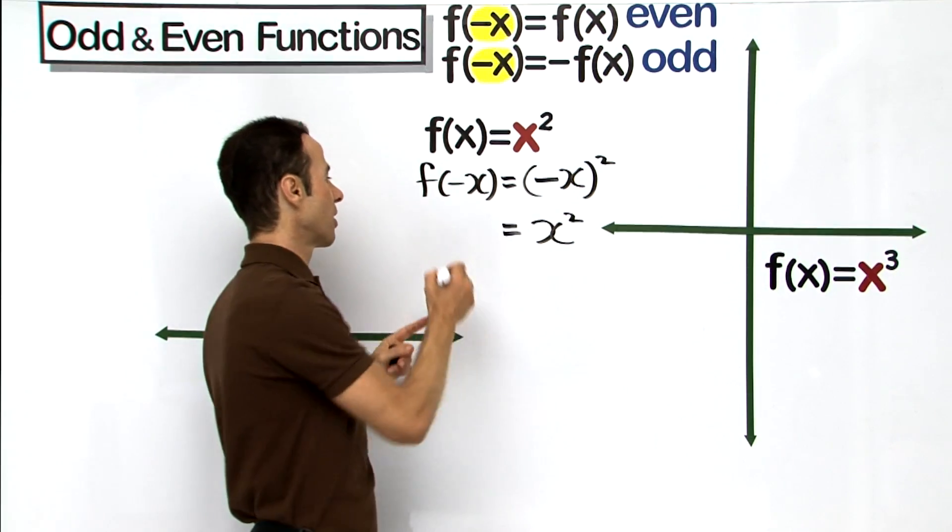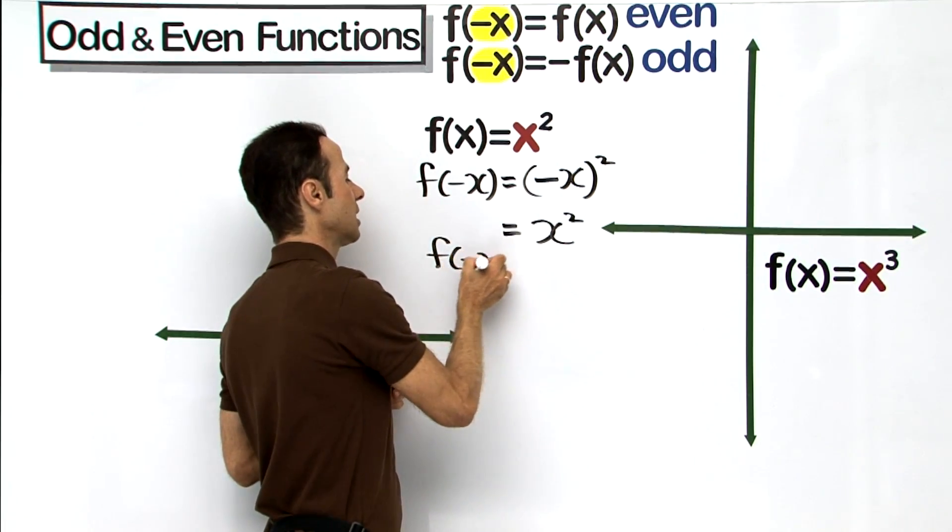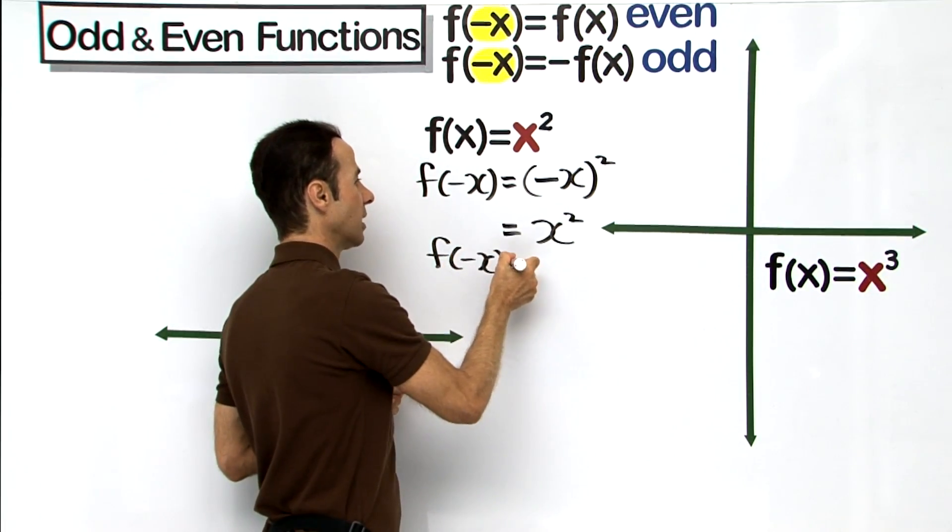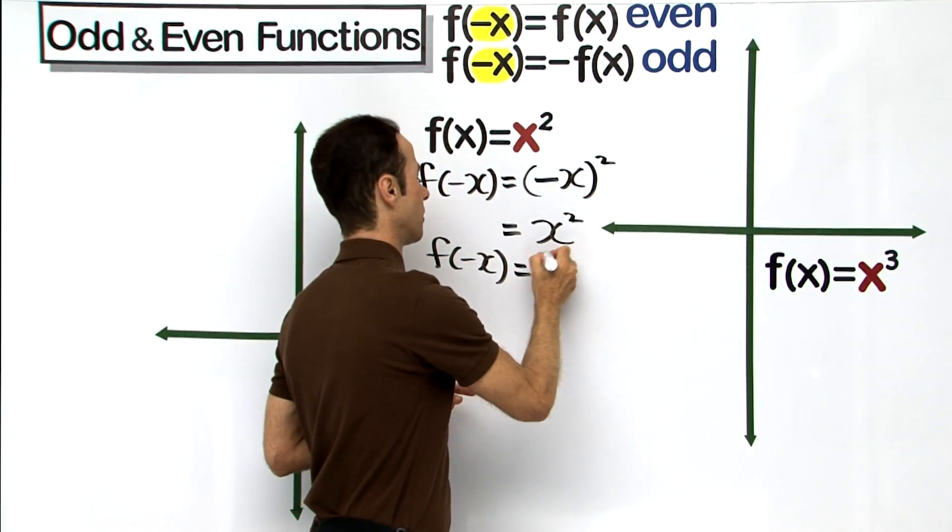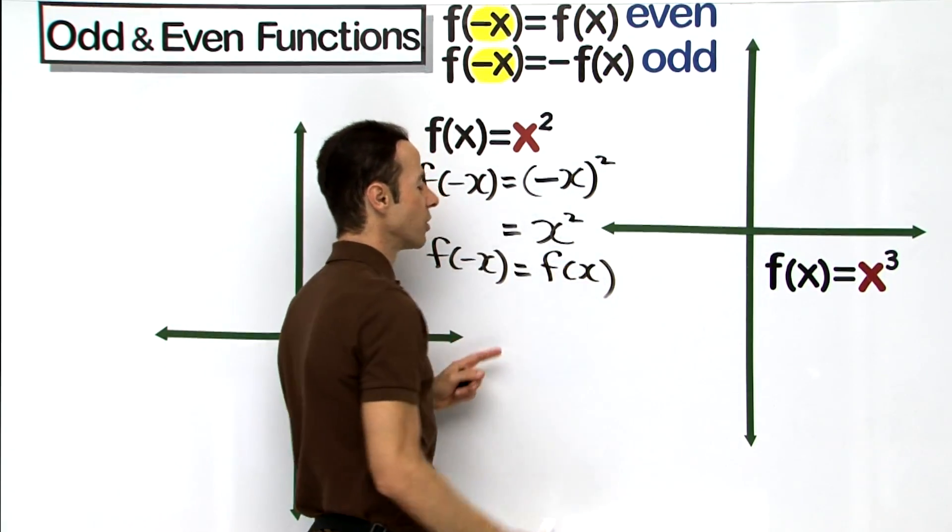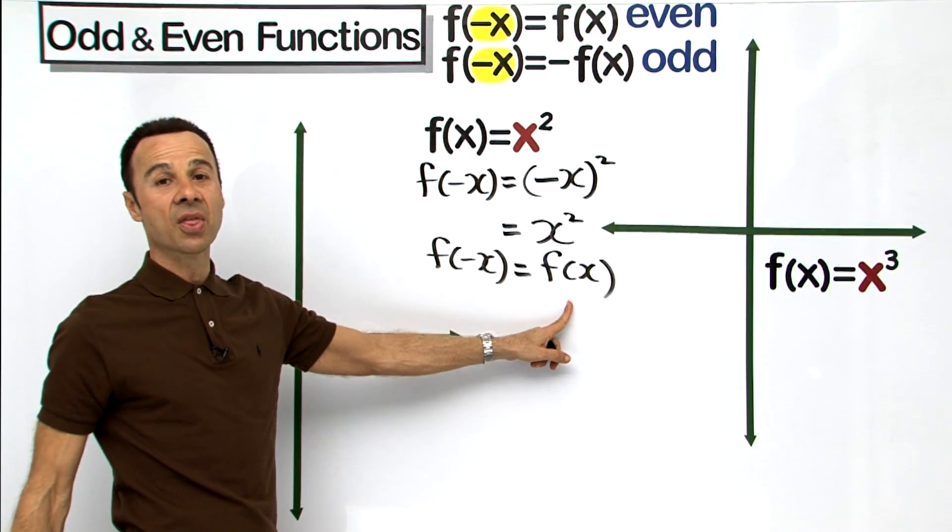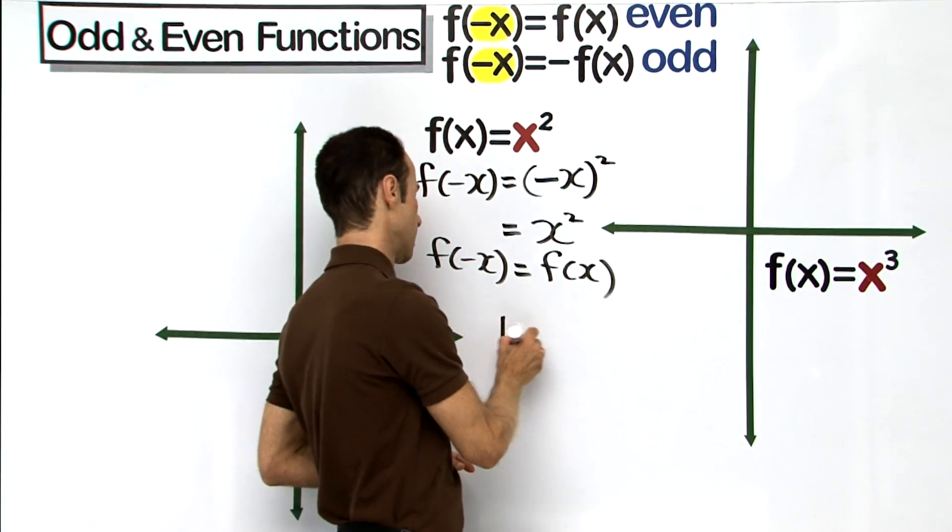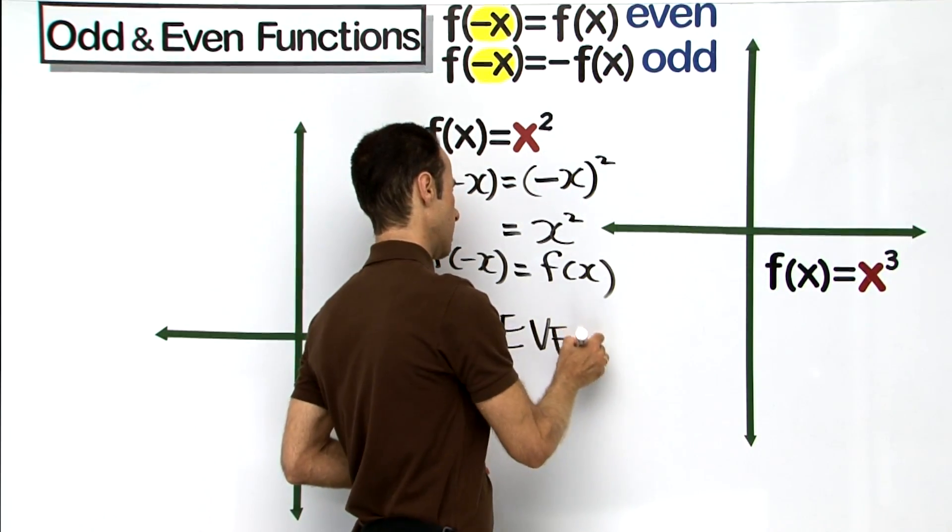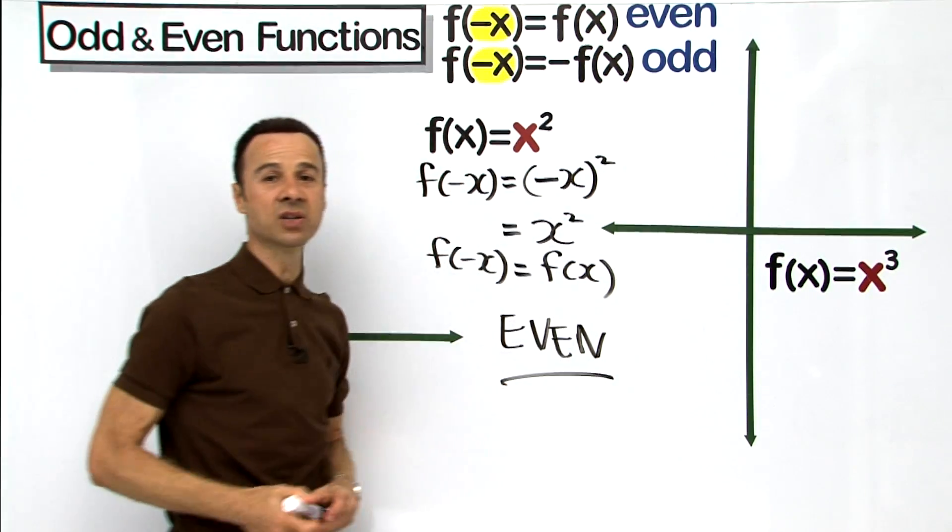So that means that f(-x) is equal to f(x) as it originally was, and that means that it is an even function.